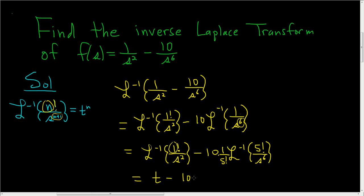Minus 10 times, and then 5 factorial is 120. And in all of this, n is 5, because here's the 5, that's n. So we just get t to the 5th.